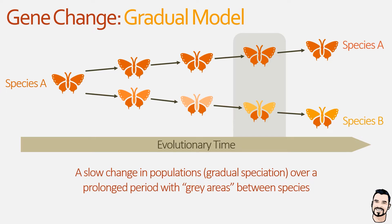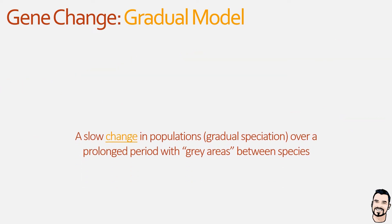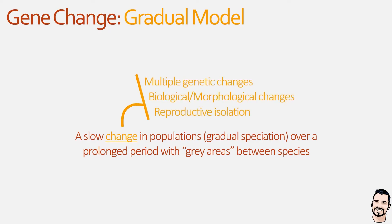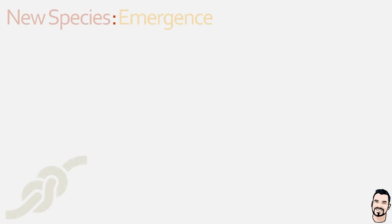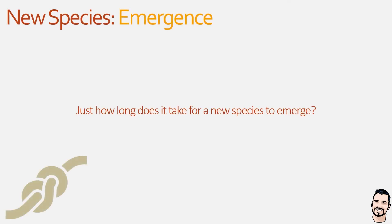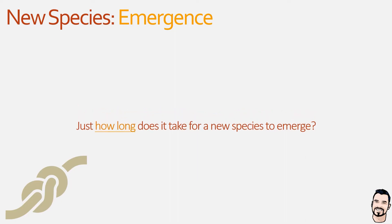This gradual change is commonly associated with multiple genetic, biological, and morphological changes as a result of changes in the environment, and over time this results in the formation of a reproductive barrier that strengthens to the point of reproductive isolation and the generation of a new species. Now we know this tempo can be fast or slow, relating to our punctuated or gradual models, but just how long does it actually take?